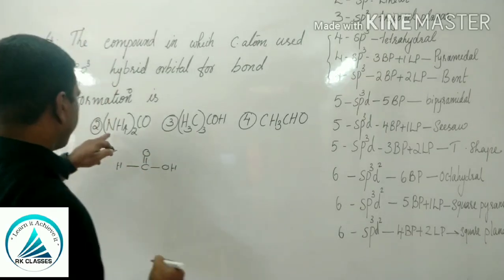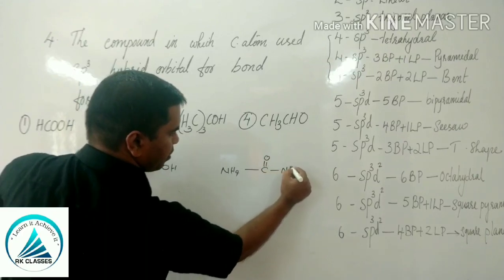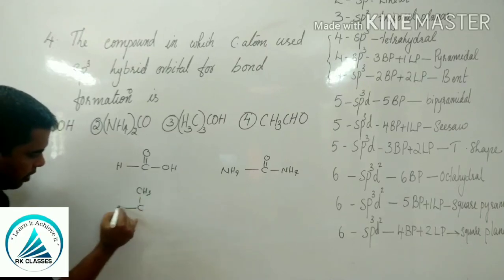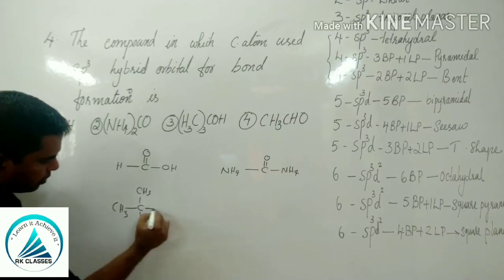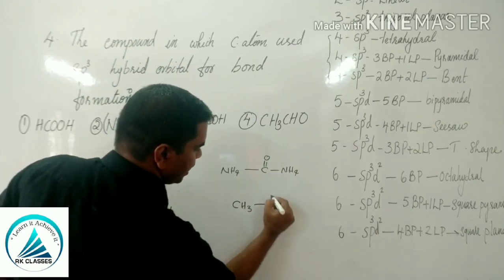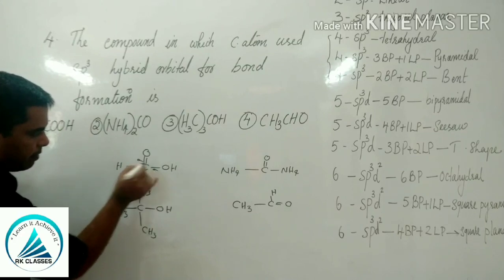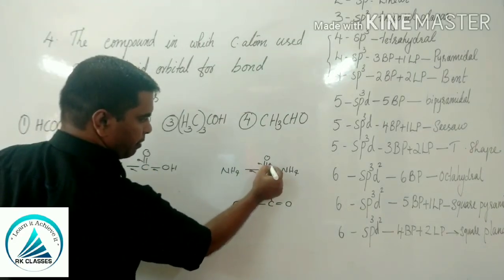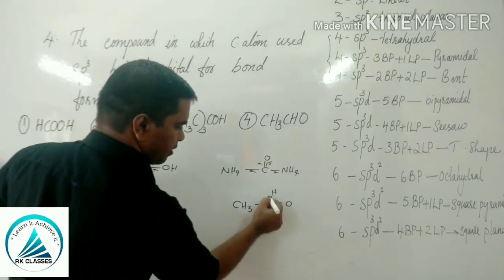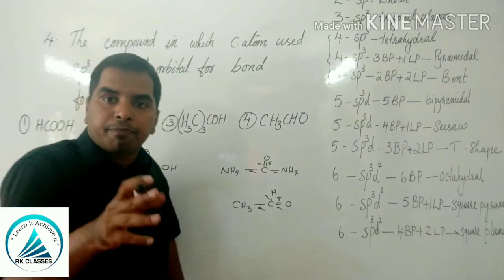The second choice is an ammonium compound. The third choice involves CH3-OH structure, and the fourth is an aldehyde with a C=O double bond. A double bond consists of 1 sigma and 1 pi bond; a triple bond is 1 sigma and 2 pi bonds. Pi bonds are not counted as bond pairs.